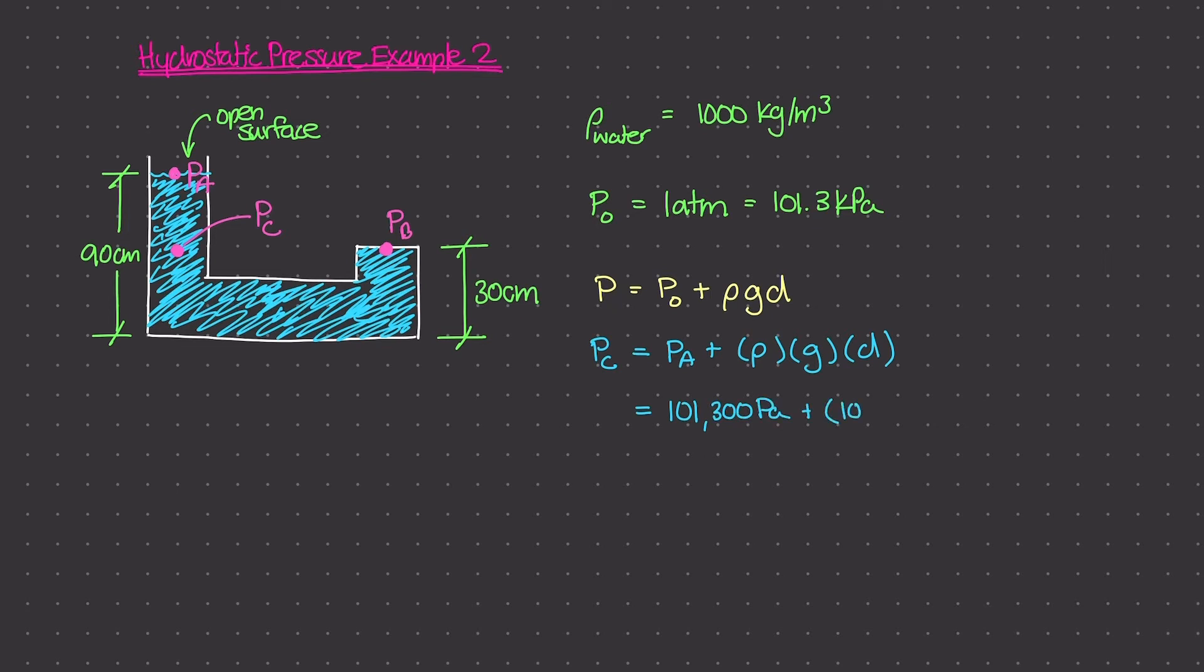Plus ρ, well, ρ is 1,000 kilograms per meter cubed, times g, which is 9.81 meters per second squared, times d. Now, what is d?